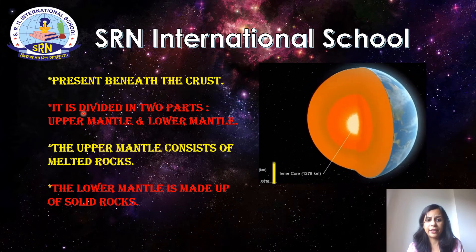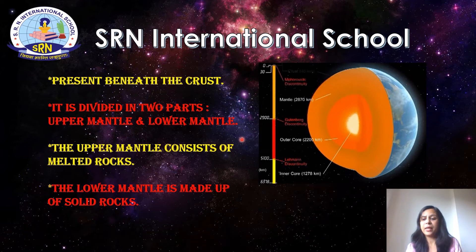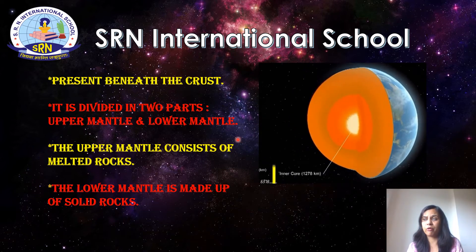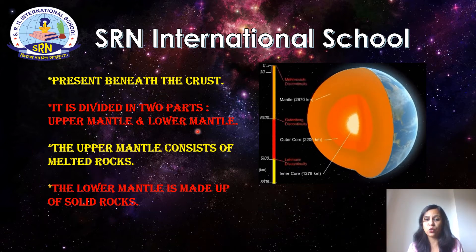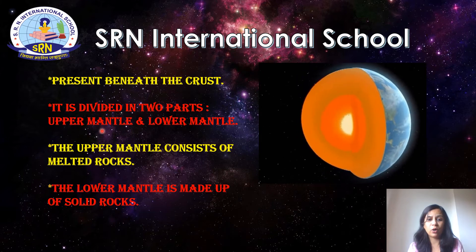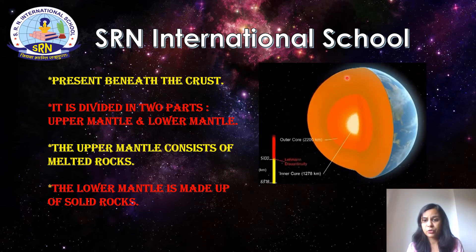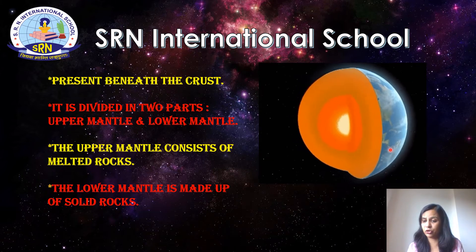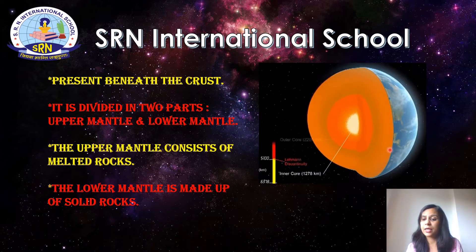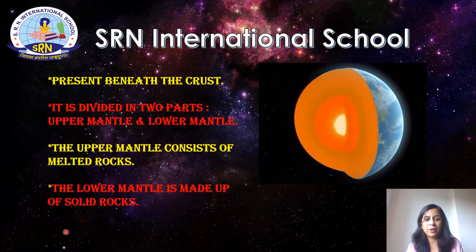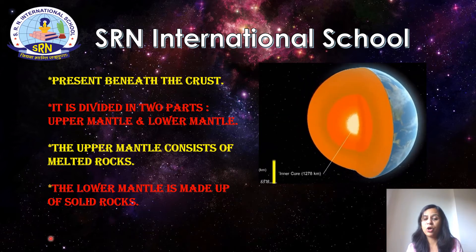The next layer beneath the crust is known as the mantle. The mantle has an average thickness of around 2,900 kilometers and is subdivided into upper mantle and lower mantle. The upper mantle is made up of melted rocks, so it is in a liquid state. The lower mantle, which exists below the upper mantle, is made up of solid rocks and is therefore in a solid state.